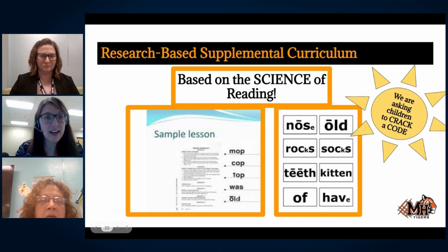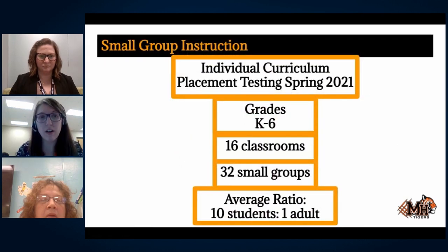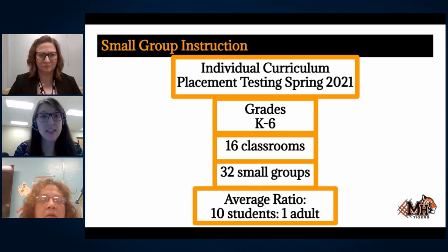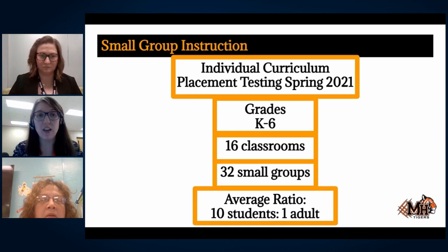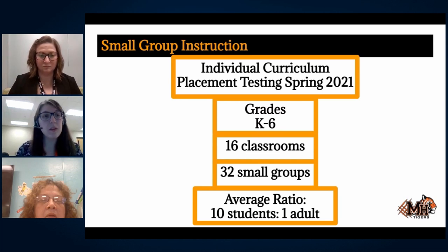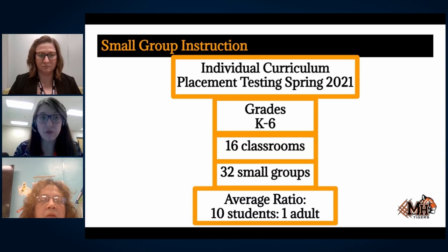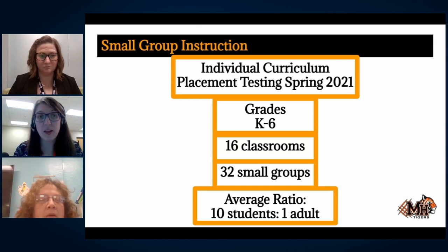Here's a breakdown of what our intervention programs look like. It started in spring of 2021 during remote learning, where we did individual placement testing with students to determine what curriculum and what level would be the best fit. That was done by amazing staff who worked one-on-one with students while they were remote. When we came back in the fall, we were able to do more in-person placement tests and get our new students placed so that they were ready for our intervention blocks. This intervention block takes place with all of our students in grades K through six.